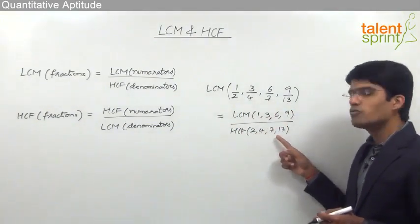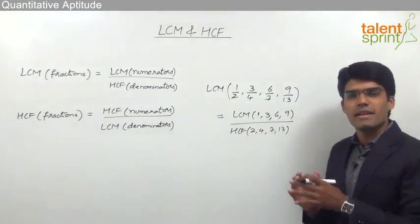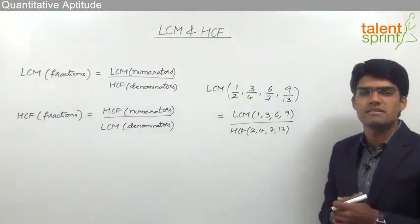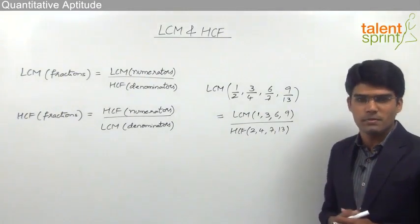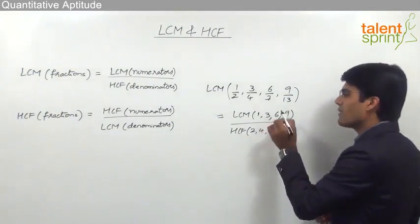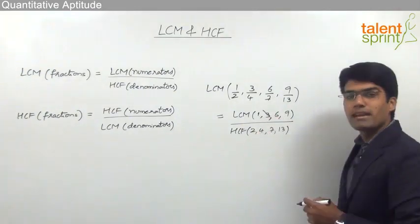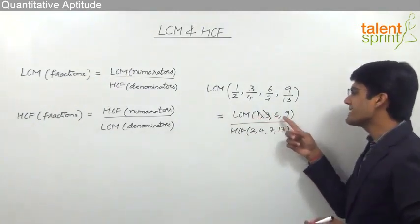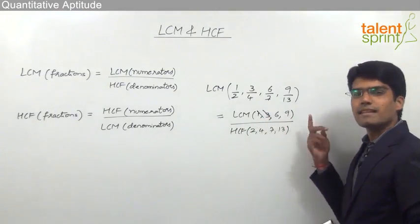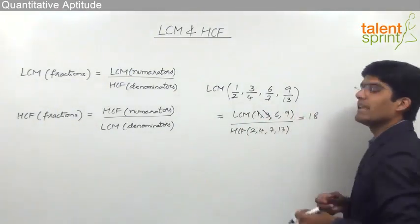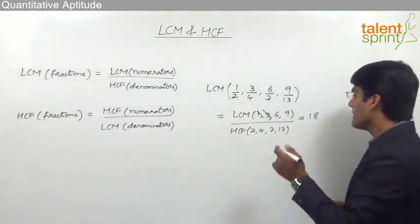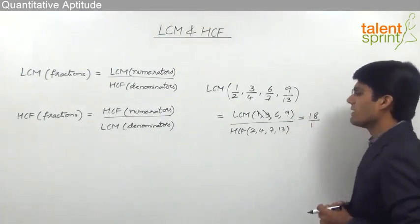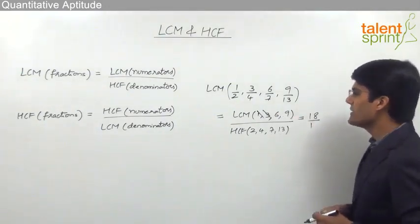To find the answer we need LCM of 1, 3, 6, and 9 divided by HCF of 2, 4, 7, and 30. When finding LCM, if a number is a factor of another it can be struck off. Here, 3 is a factor of 6 and 9, so 3 can be struck off, and 1 can also be struck off since 1 is a factor of all numbers. So LCM of 6 and 9 equals 18, divided by HCF of 2, 4, 7, and 30 which equals 1 — giving LCM of the fractions as 18.